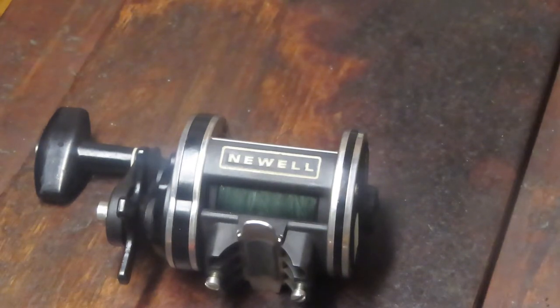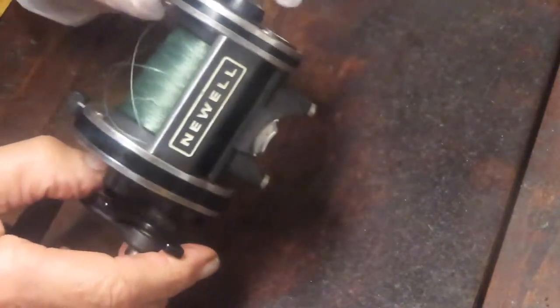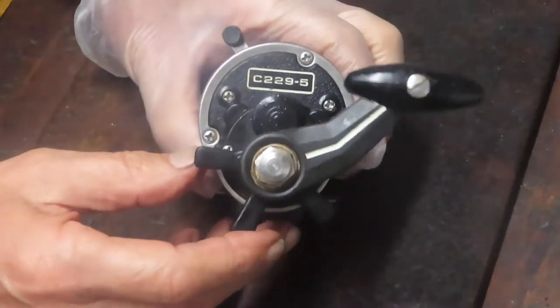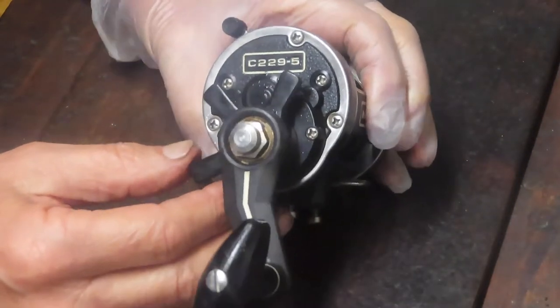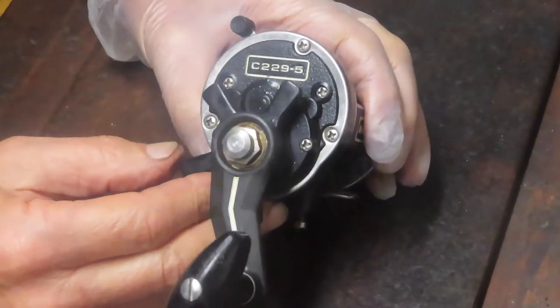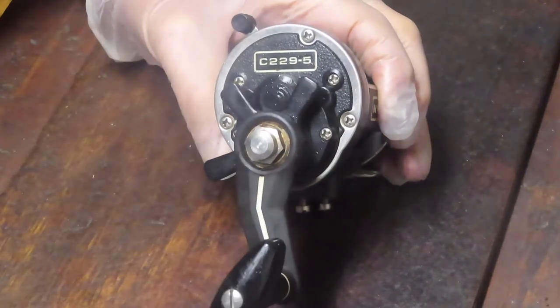We're going to do them both just because they're different versions, and those of you that may have one will see how it comes apart, how it gets serviced, as it goes back together again. If you don't have one and you're just trying to get one, well that's something to look at as well. In this case we're going to do the C229-5. These are kind of the holy grails of fishing reels.